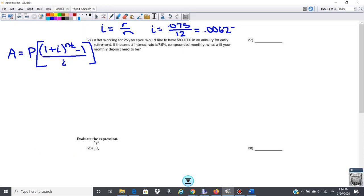And then we'll plug this into our formula. So we want our amount after time to be 800,000. So we're going to go 800,000 equals P, and then we have 1 plus our i.